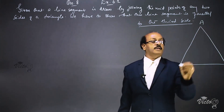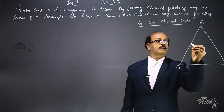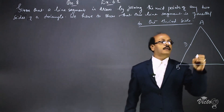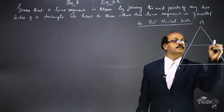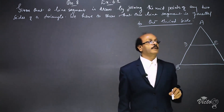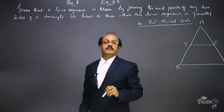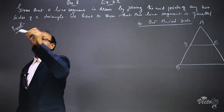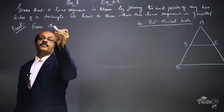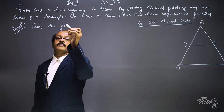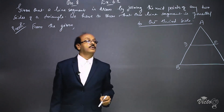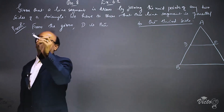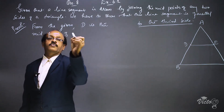We have a triangle ABC. D is the midpoint of AB and E is the midpoint of AC. It is given that D is the midpoint of AB.